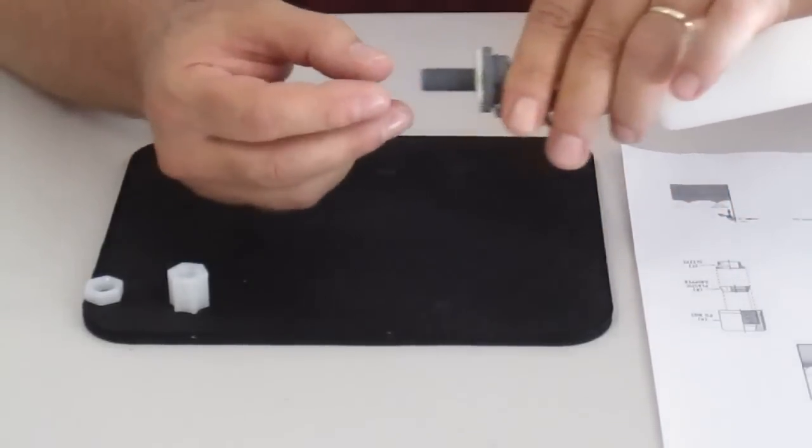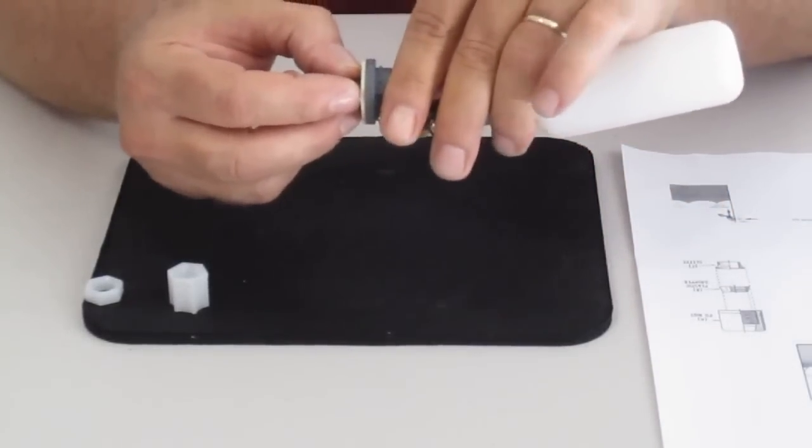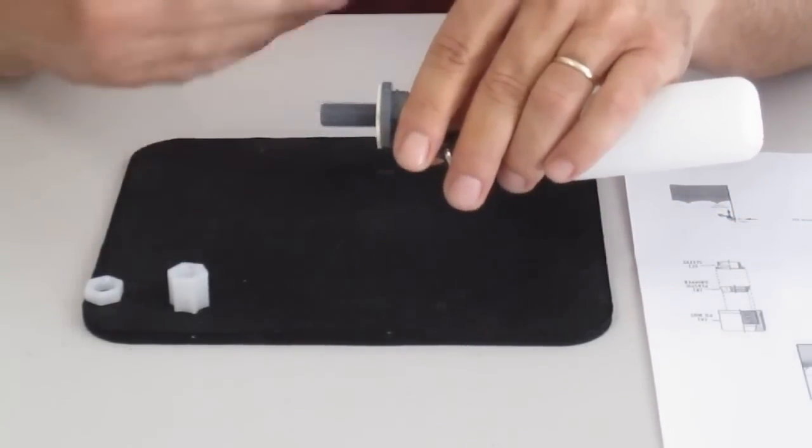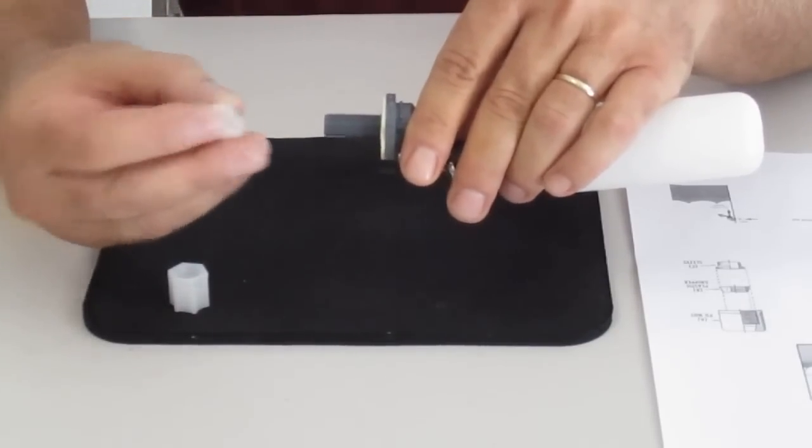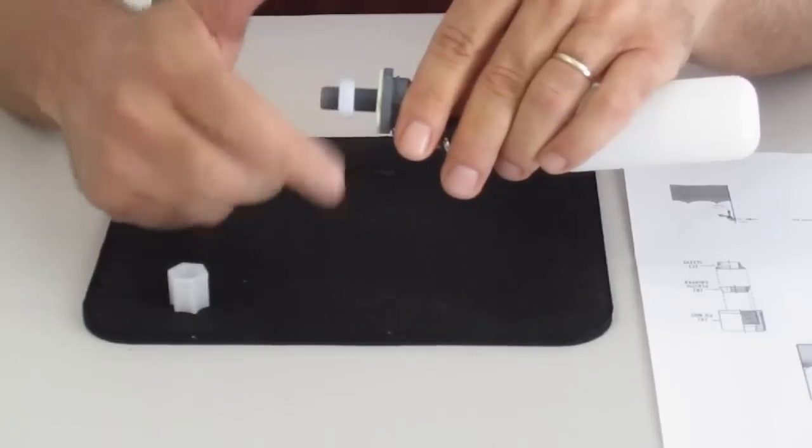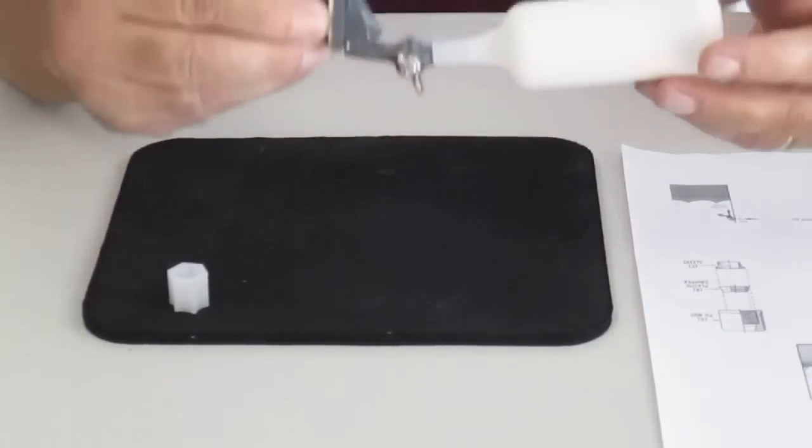Then this is going to be installed onto your reservoir or the tank that you're going to fill with water. Then you're going to use this small nut and you're going to screw that in and secure this to the wall of your reservoir.